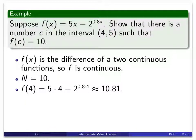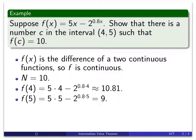Now we'll evaluate the function at the other point. f(5), we get 5 times 5, that's 25. This actually we can calculate, that is, the exponent would be 4. So 2 to the 4th is 16, 25 minus 16 is 9.